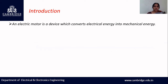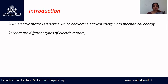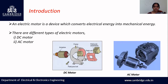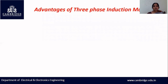Starting with the introduction, we should know what is an electric motor. An electric motor is a device which converts electrical energy into mechanical energy. There are mainly two types of electric motor: one is the DC motor and another one is the AC motor. Under AC motor, we have two types: single-phase AC motor and three-phase induction motor.